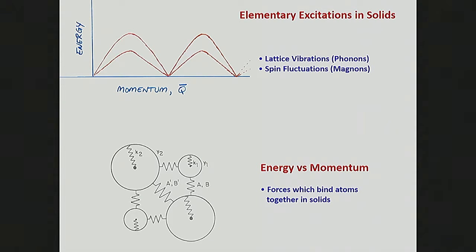When we look at elementary excitations in solids, they have some dispersion relationship — energy versus momentum — and we're very interested in what that is. This is just a cartoon of a simplistic view of phonons in a simple solid: two branches, one relatively low energy and one higher energy. These are periodic in reciprocal space — they go up and come back down. This energy versus momentum relationship encodes the information about the forces that are present in the material, and that's usually what you're really trying to get at.